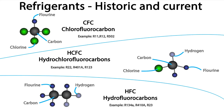Instead we refer to them as HFCs or even just the R number. You can also see on screen an example of each of the molecules, and you can see where the names come from. You've got the fluorine, carbon, and chlorine which makes up the chlorofluorocarbons. Then you've got the chlorine, carbon, hydrogen, and fluorine which makes up the hydrochlorofluorocarbons. And for the HFCs we've got the hydrogen, fluorine, and carbons.